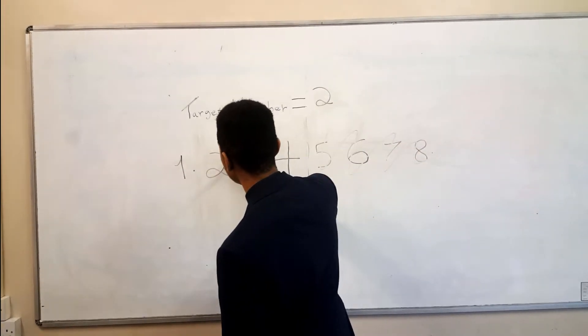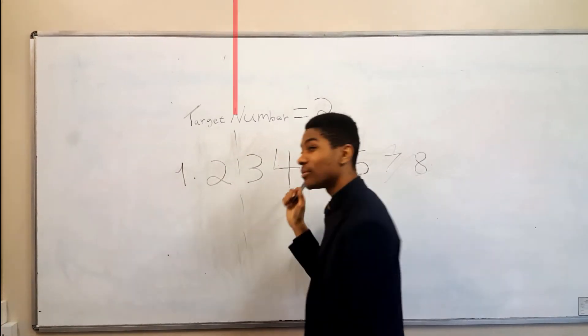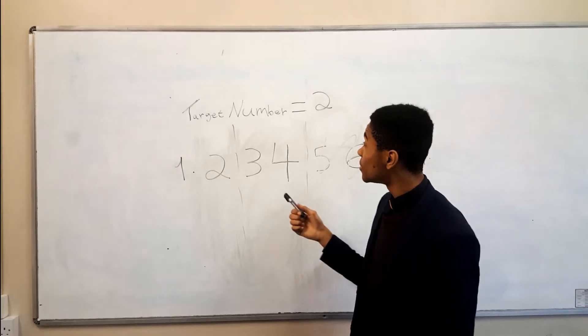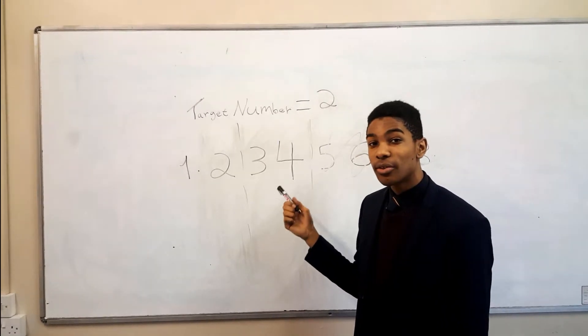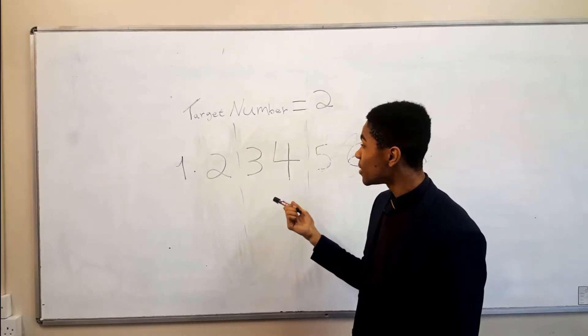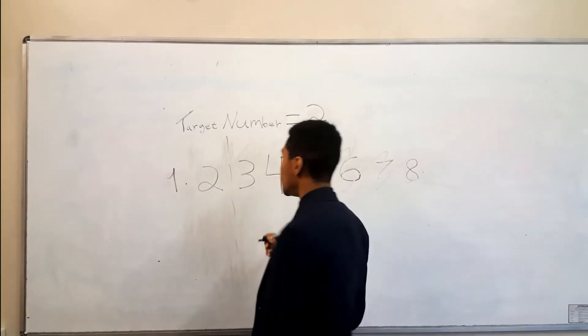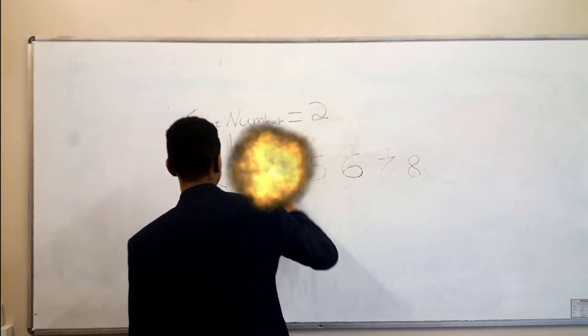We then split the list in half again. We check if 2, our target number, is equal to the value on the right. 2 is not equal to 3, so we check if 2 is greater than or smaller than 3. 2 is smaller than 3, and so we move to the left and discard the right.